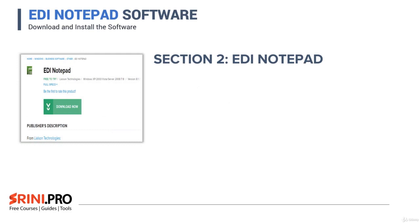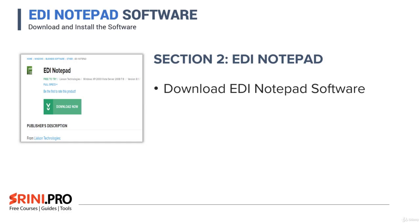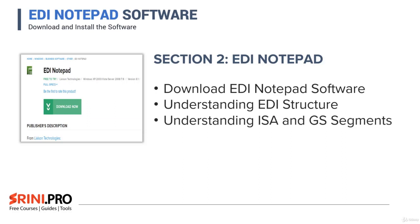In section two, we will look at the EDI Notepad. We will download and install the software. In the lectures, you will see how to download the EDI Notepad software and understand the EDI structure. We'll open up an EDI file and look at all its structures — what are the parts of an EDI, how the EDI content looks. You will learn what the ISA and GS segments in an EDI file are, and what the important parameters in these segments are.